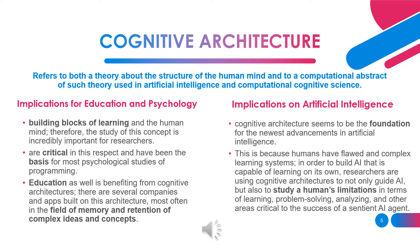Cognitive architecture refers to both a theory about the structure of the human mind and to a computational abstraction of such theory used in artificial intelligence and computational cognitive science. Human cognitive architecture provides a generic framework of the information-processing stages that learners use to encode, store, and modify information, and specifies the strategies that learners use to transfer information in and out of the stores. As an implication for education and psychology, as the world begins to utilize more technology, it is important to understand the dynamics between technology and the human mind.